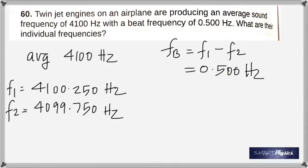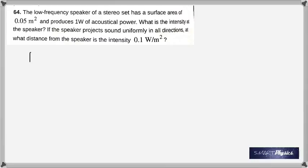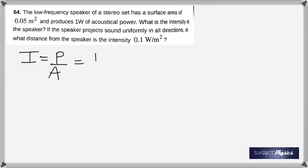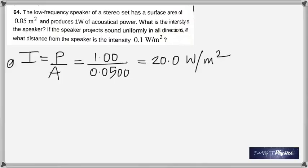The low frequency speaker of a stereo set has a surface area of 0.05 meters squared and produces 1 watt of acoustical power. What is the intensity at the speaker? If the speaker projects sound uniformly in all directions, at what distance is the intensity 0.1 watts per meter squared? Intensity is power divided by area. Power is 1 watt and area is given, so divide those and you get the intensity in watts per meter squared.